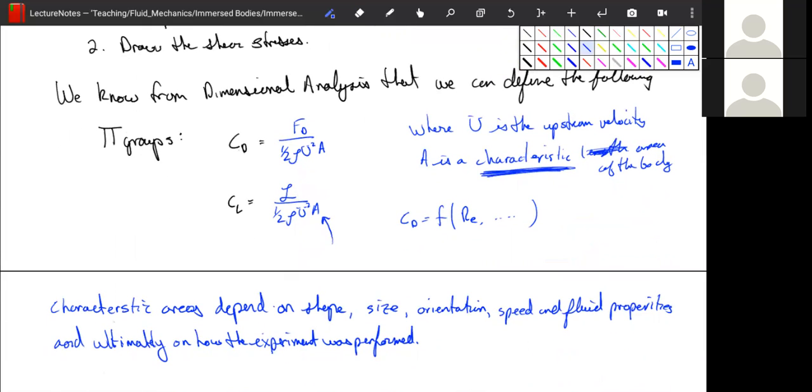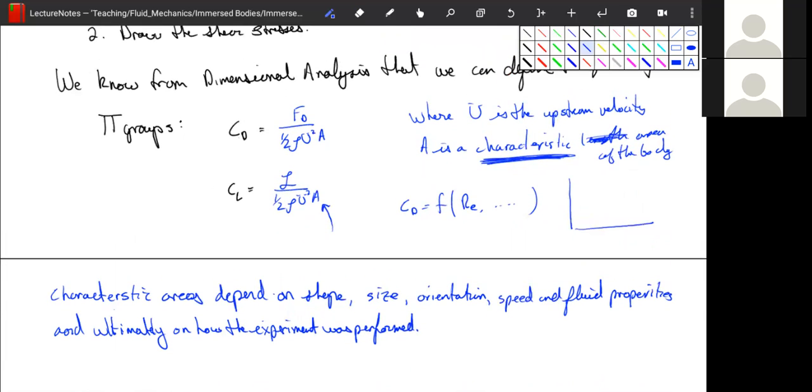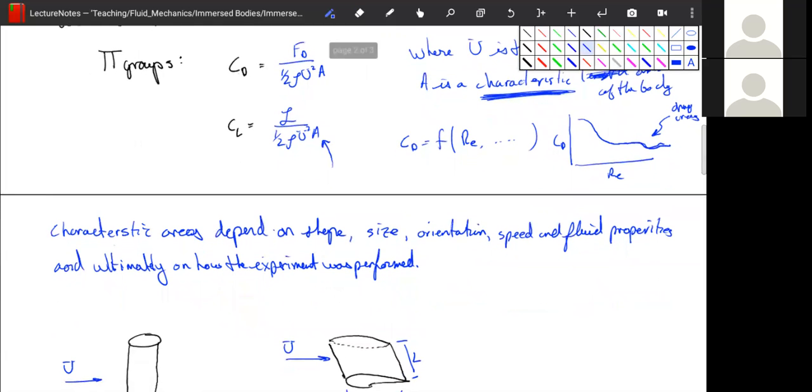So the fact that it's a function of this Reynolds number tells us that we can do some simple experiments and plot it. And in fact, you can very easily go on Google, and look up Reynolds number versus drag coefficient for like a sphere. And what you'll find out is that it looks something like this. It's called the drag crisis. We'll talk about why it's called the drag crisis. Anyway, so you can do these experiments and then reuse these plots for lots of different other scenarios, which is very useful.